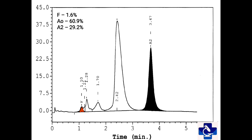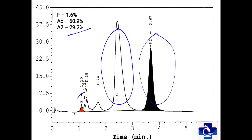HbE, Hb Lepore, and HbA2 share a common retention time. In this graph, we have A2 of around 29.2% and HbA0 of 60.9%. Fetal hemoglobin is mildly raised. A2 cannot be synthesized at this percentage, so this is an overlap of HbE occurring on A2 — meaning this fraction is A2 plus HbE. So this is a case of HbE heterozygous.